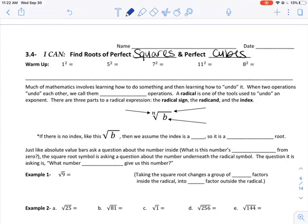Today we are finding roots of perfect squares or square roots and tomorrow we'll focus on cube roots. Both square roots and cube roots have something called a radical.